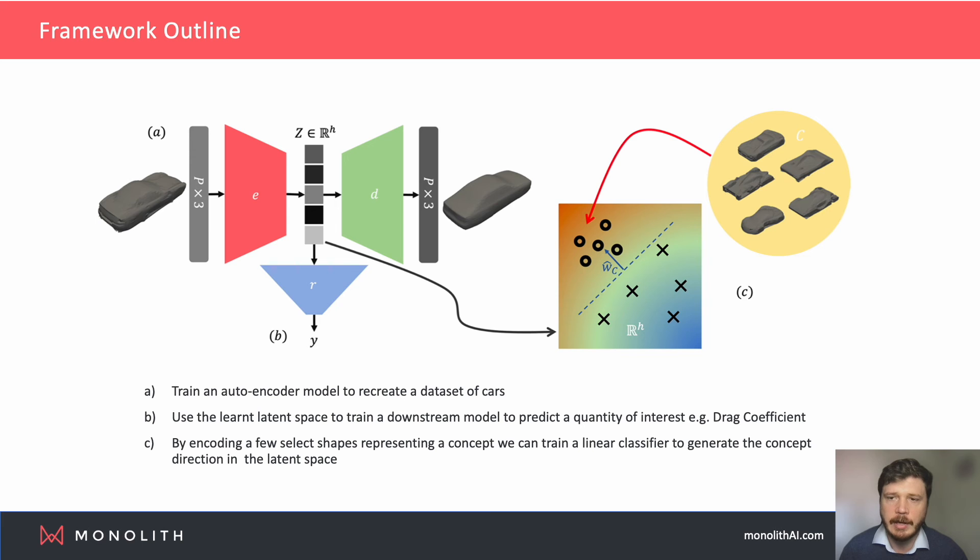Finally, by selecting samples from the validation set that share a common high-level concept, for example sports cars, we can train a linear classifier to separate the encoded samples from other collections that are either random or represent a different concept. So, the classifier learns a maximally separating hyperplane in the latent space, and the CAV is defined as the normal to this hyperplane. And this vector represents the concept direction in the latent space.